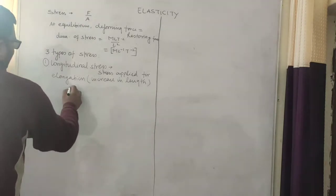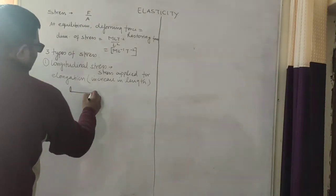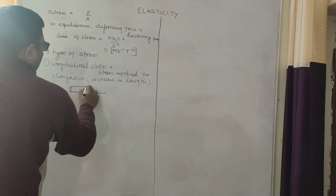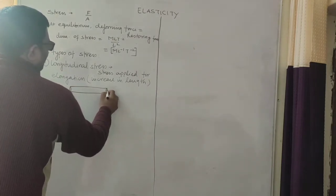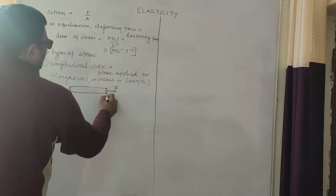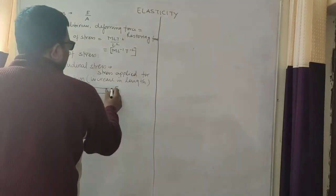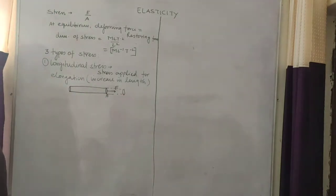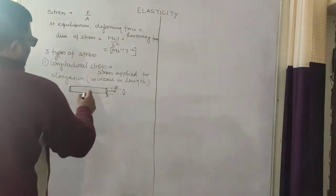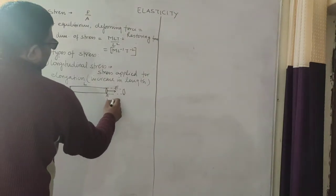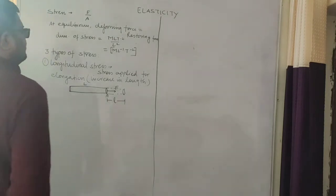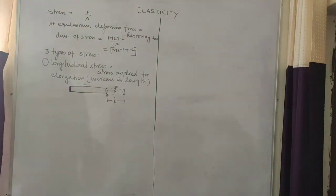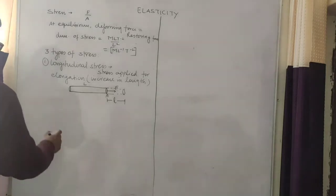For example, if a wire, cylinder, or rod is like this — if I apply a force on this unit area and the length increases, then it is longitudinal stress. This is the original length and this is the increase in length. Longitudinal stress has the dimension of stress and its unit is Newton per meter square.